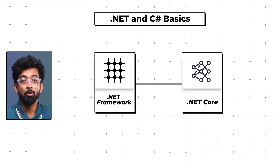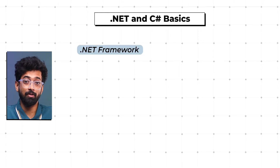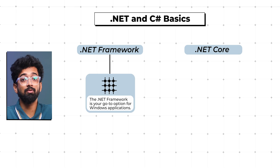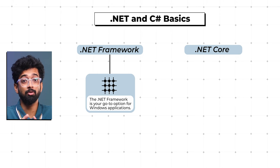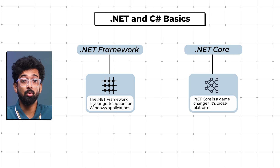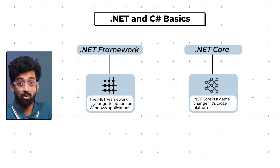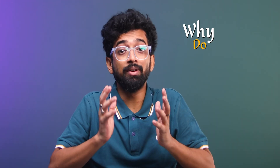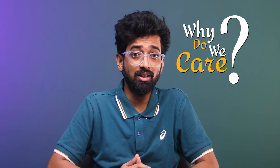First up, we have .NET Framework and .NET Core. The .NET Framework is your go-to option for Windows applications, but here's where things get exciting: .NET Core is a game changer. It's cross-platform, meaning you can build apps for Windows, Linux, and macOS. With .NET 5, 6, 7, and 8 unifying .NET Core into a single platform, it's the future you want to be part of.